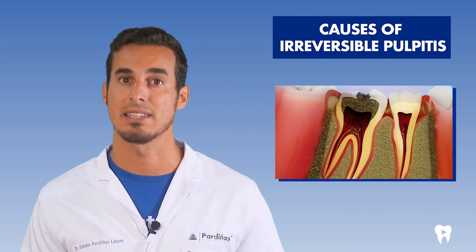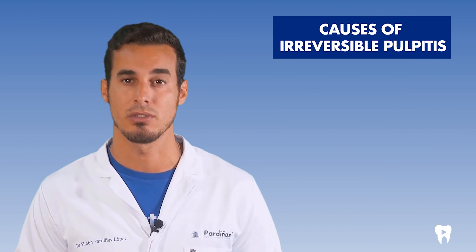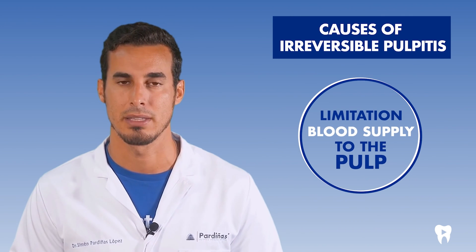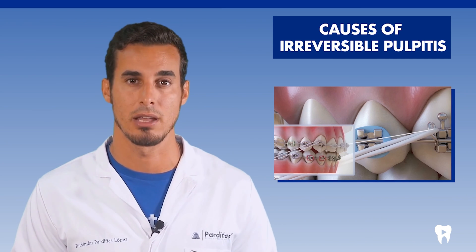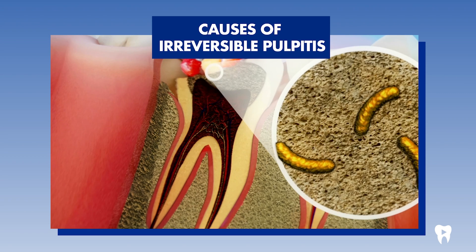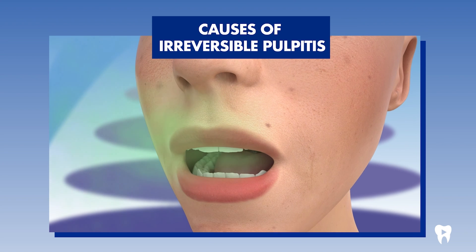Normally when the tooth responds to a heat stimulus that does not stop, the pulp is usually irreversibly affected. It can also occur in cases of very deep caries where a lot of dentin has to be removed and it is very close to the pulp or has even reached it. Another reason may be a limitation of the blood supply to the pulp, caused by trauma, orthodontic movements, etc. This necrotic pulp can become contaminated with bacteria and degradation products and produce a bad odour, discolouration and bad taste in the mouth.